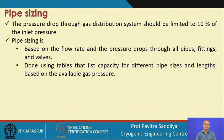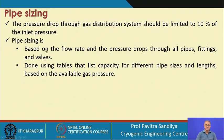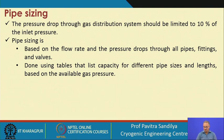We do not want to exceed 10% of the inlet pressure — for example, if the inlet pressure is 1000 bar or 800 bar, we do not want more than 100 bar pressure drop inside the pipeline. Pipe sizing is based on the flow rate and pressure drops through all pipes, fittings, and valves. It is done using tables that list the capacity of different pipe sizes and lengths based on the available gas pressure.